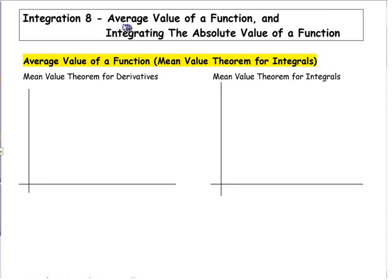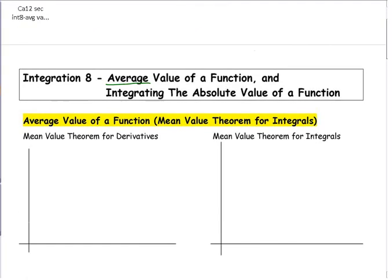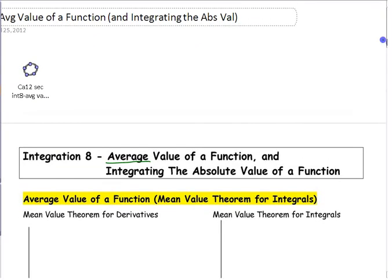Let's remember what the average is. When you first learn about averages, somebody probably taught you that to find the average of something — like three people — you add everything together and divide by how many there are.